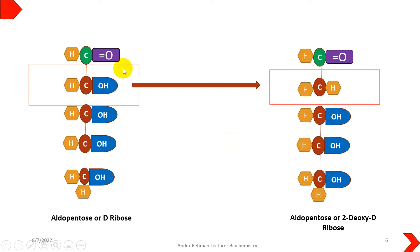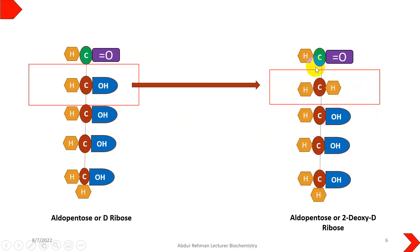If we look at the structure closely, the only difference between ribose and deoxyribose is at the carbon number 2 position. Here at carbon number 2, an oxygen molecule is missing. That's why it is called 2-deoxyribose.